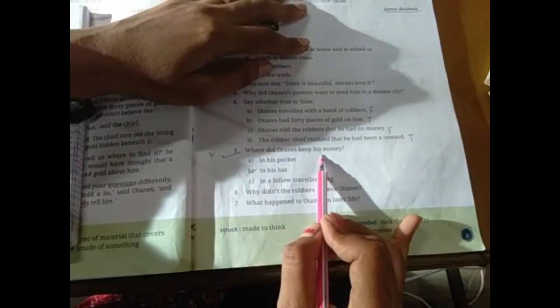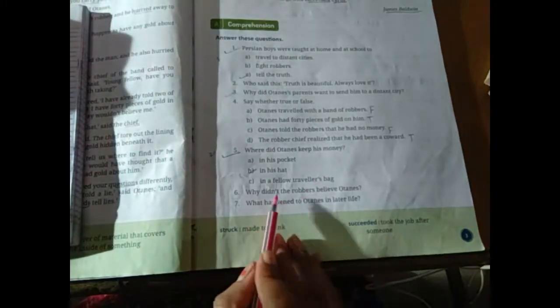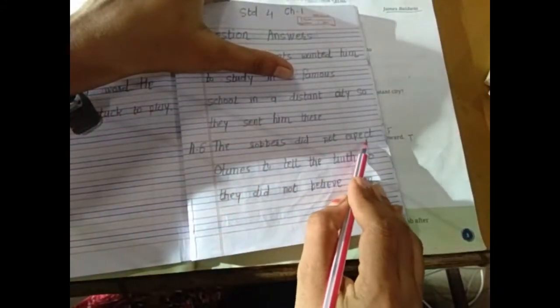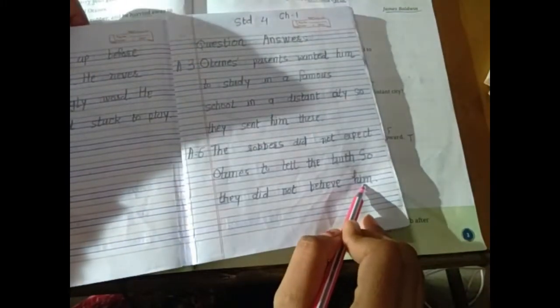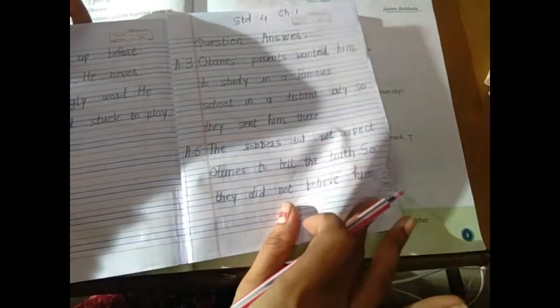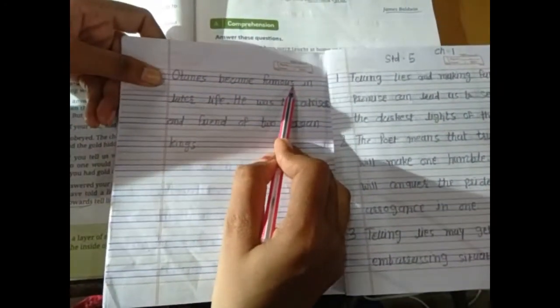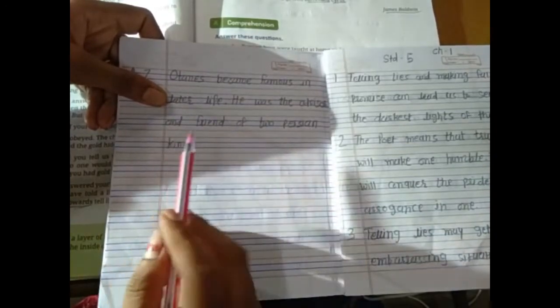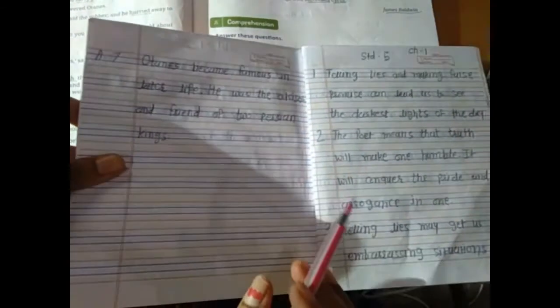Where did Hortense hide his money? In his head. Why didn't the robbers believe Hortense? Because the robbers did not expect Hortense to tell the truth, so they did not believe him. What happened to Hortense in later life? Hortense became famous in later life. He was the advisor and friend of two Persian kings. Okay?